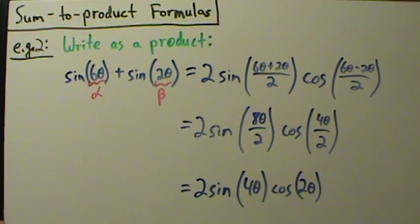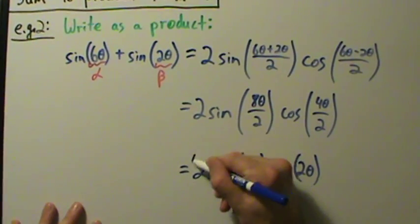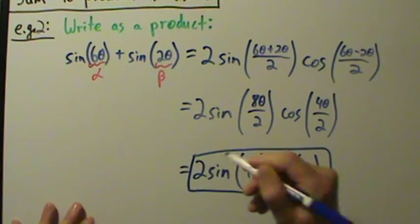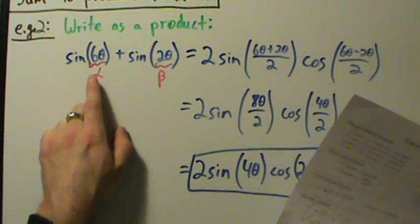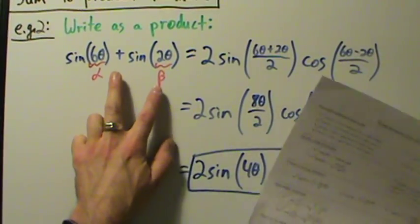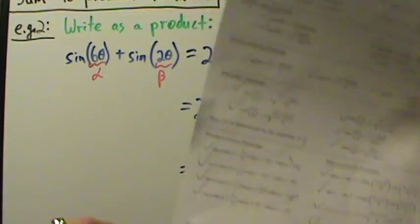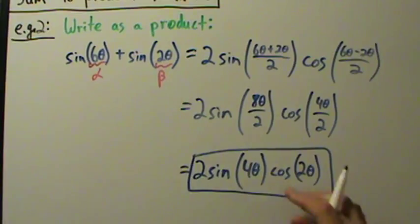So that's it for example two. Really not a whole lot happening here. The idea is to make sure that you use the correct formula, and then once you identify what your alpha and beta are, just plug these things into the formula here. That's pretty much it, and then simplify as much as you can.